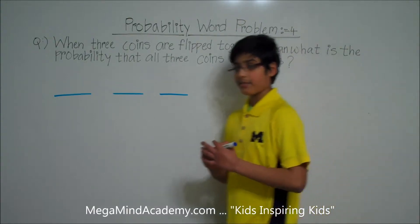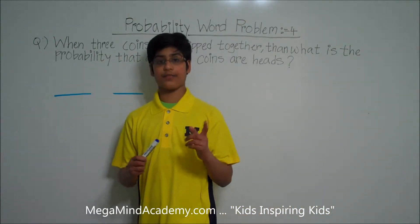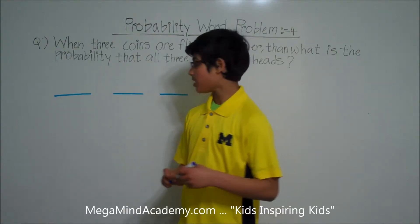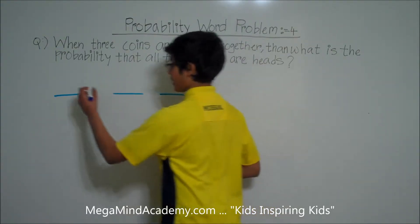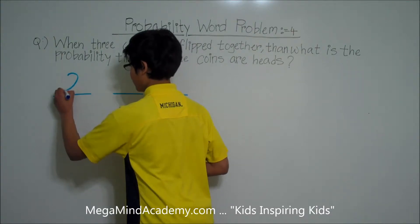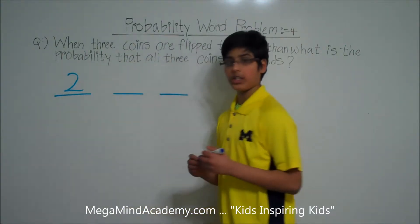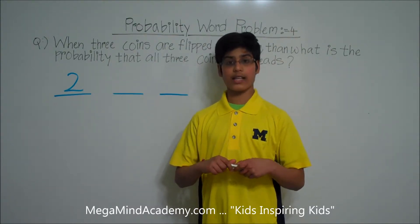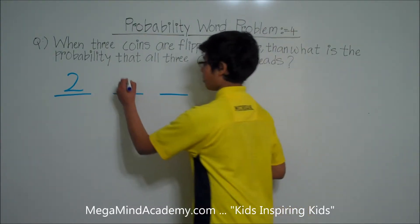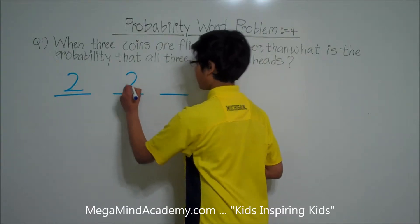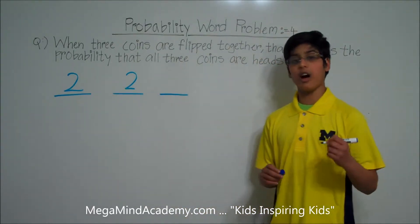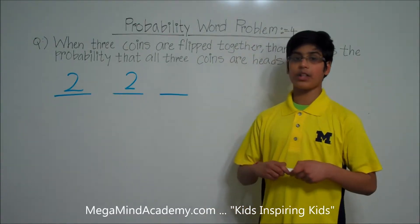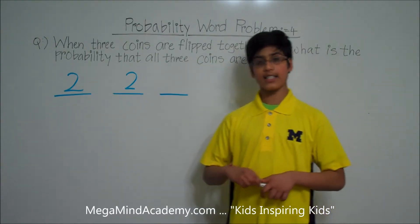When coin one is flipped, we have two possibilities: heads or tails. When coin two is flipped, we also have two possibilities — heads or tails. And when coin three is flipped, we also have two possibilities — we can either get heads or tails.